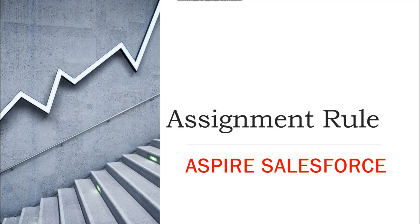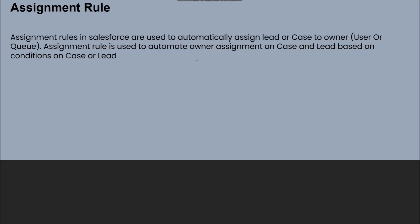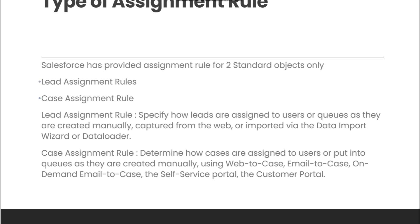Hello everyone, my name is Smiti Sharma and today I am back with a new topic of Salesforce — assignment rules. Assignment rules in Salesforce are used to automatically assign a lead or any case to its owner. Owner means a user or a queue. A queue has a number of users. Assignment rule is used to automate owner assignment on case and lead based on conditions.